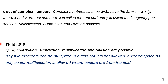Let us define the next term, which is called fields. A field is a set of elements where multiplication and addition are observed. Q (rational numbers), R (real numbers), and C (complex numbers) are all fields where addition, subtraction, multiplication, and division are possible. Any two elements can be multiplied in a field, but this is not allowed in the case of a vector space. In vector space, only scalar multiplication is allowed, and the scalar quantity must be taken from the field.